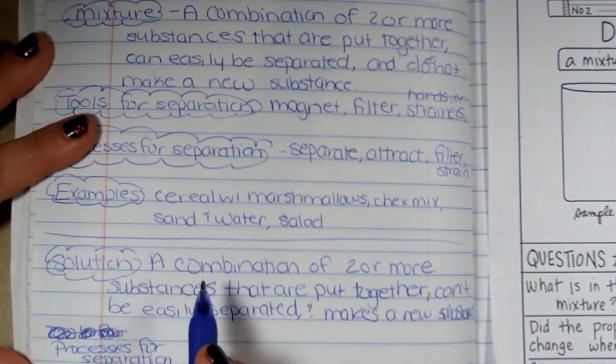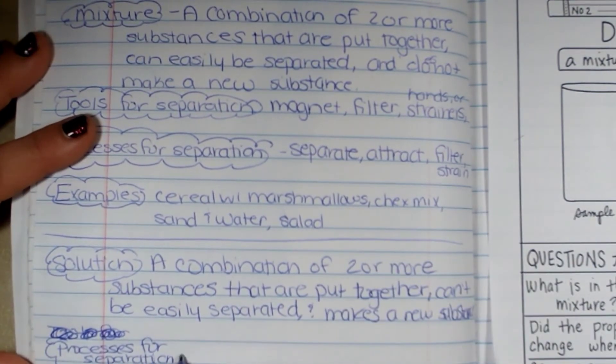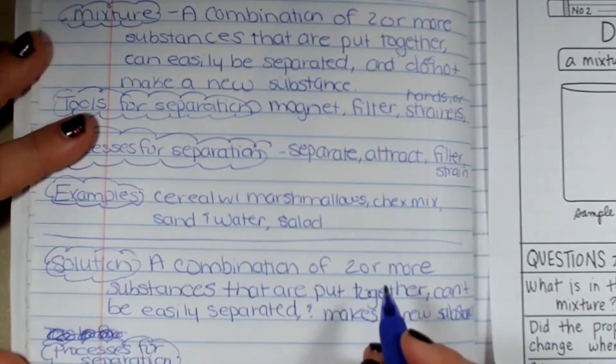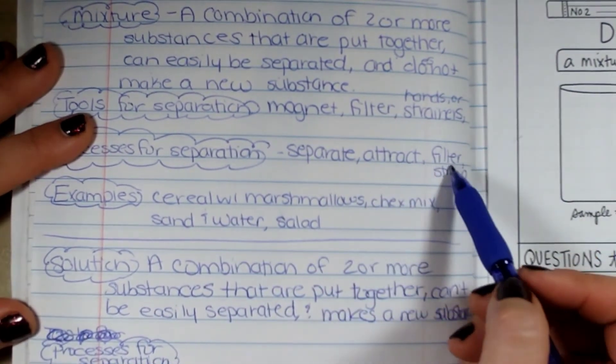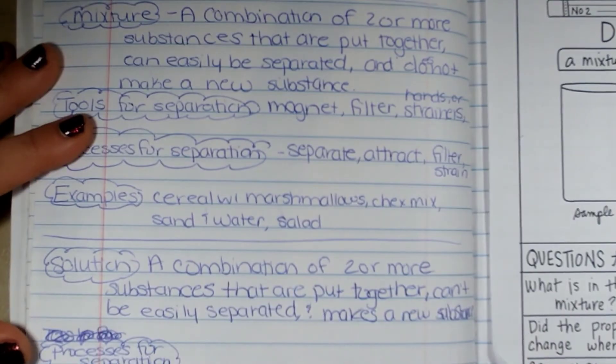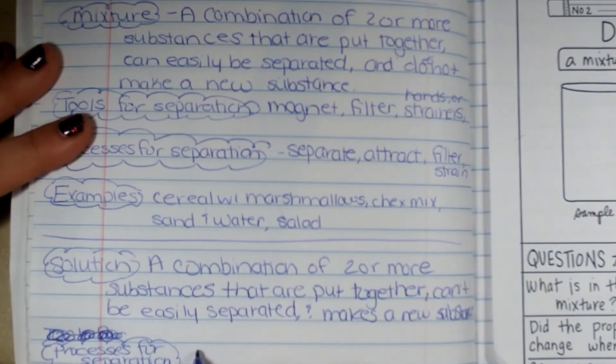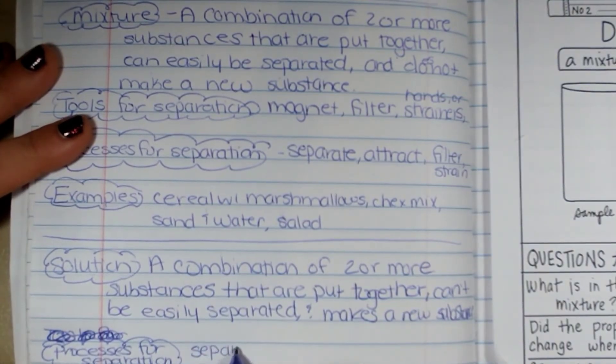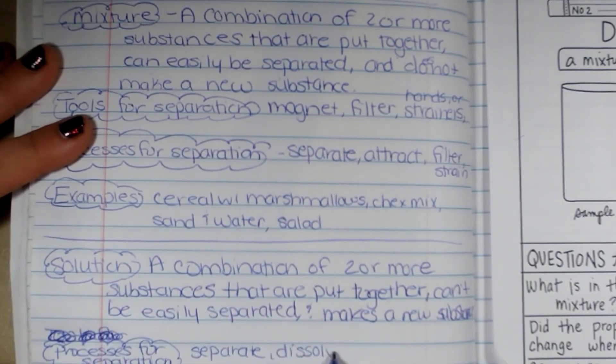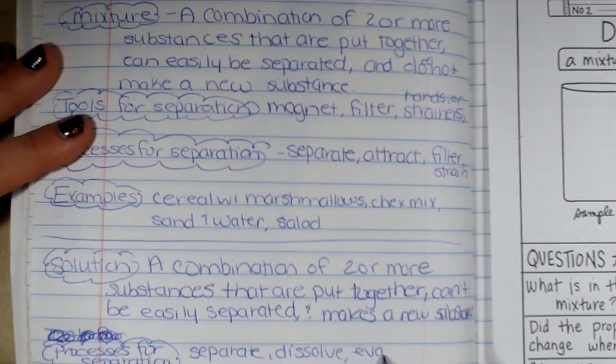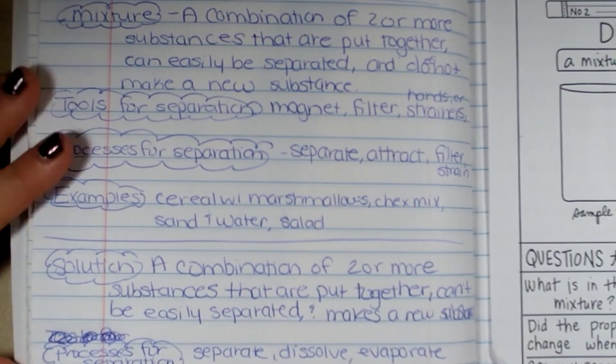Because I could use a couple of these tools, we're not going to really have magnetic. The filter and the strainer usually will not work. We're going to separate, dissolve, evaporate. Those are some processes that we can use to separate.